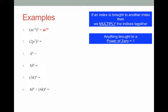Question two: 2p to the power of 7, all to the power of 3. The coefficient 2 also has to be brought to the power of 3. Expanding it: 2p to the power of 7, times 2p to the power of 7, times 2p to the power of 7. Multiplying the coefficients gives 2 times 2 times 2 equals 8, and adding the powers gives 7 plus 7 plus 7 equals 21. So the answer is 8p to the power of 21. You could go straight to this by computing 2 cubed equals 8 and 7 times 3 equals 21.